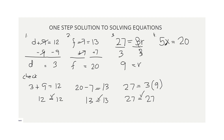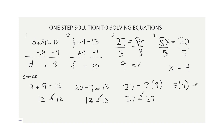Number 4: 5x equals 20. Divide both sides by 5. On the left, 5 divided by 5 is 1, leaving x. On the right, 20 divided by 5 is 4. Therefore, x equals 4. To check: 5 times 4 equals 20, and 20 equals 20. So the value of x is correct — that is our solution.